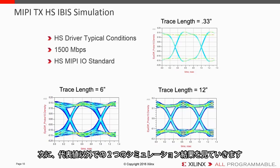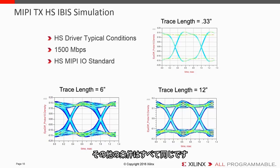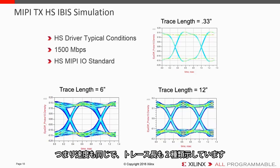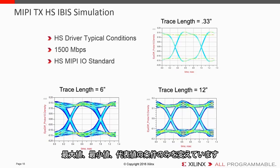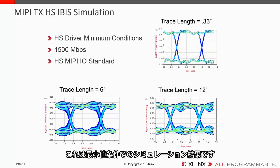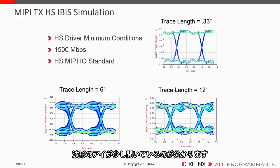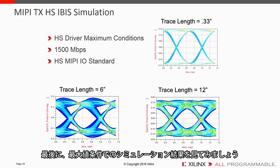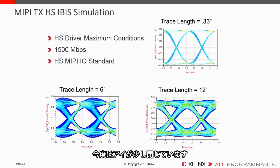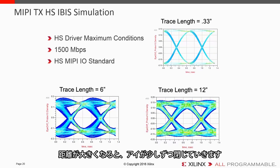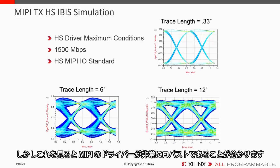The next simulations show different conditions, but the speed stays the same at 1500 megabits per second. Under minimum conditions, the waveforms open up slightly. Under maximum conditions, the eye closes a little, and the further the distance, it closes just a bit more. This really showcases the robustness of this driver for MIPI under typical, minimum, and maximum configurations.